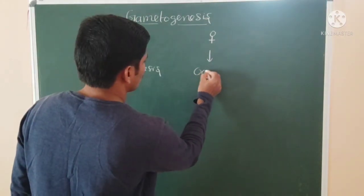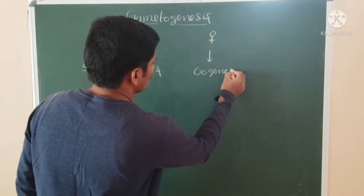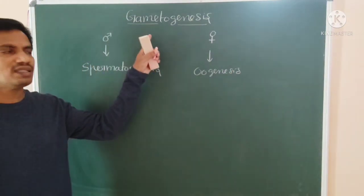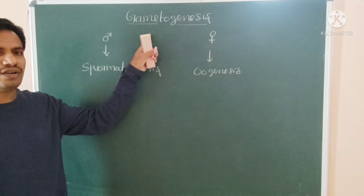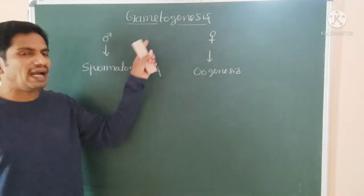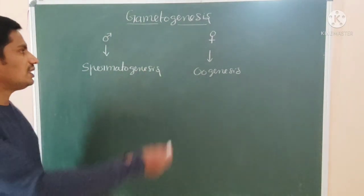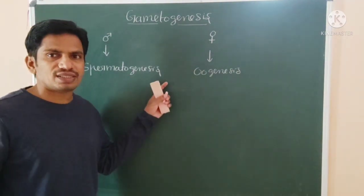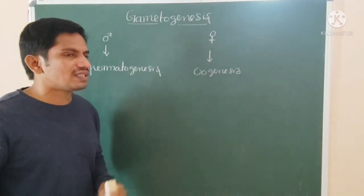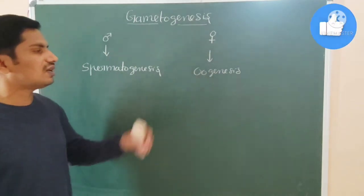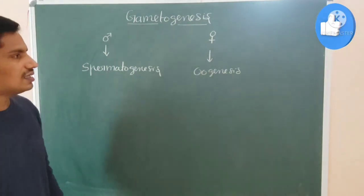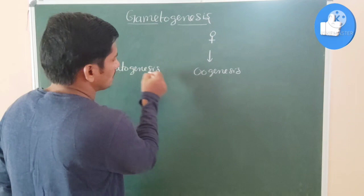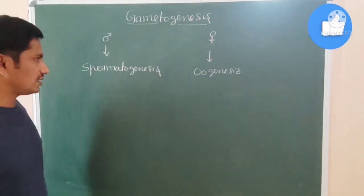So gametogenesis means the process of formation of haploid gametes. What happens in the male we call spermatogenesis, and what happens in the female we call oogenesis. Now we are going to discuss spermatogenesis first, then oogenesis.